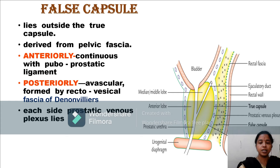Anteriorly, the false capsule continues with the puboprostatic ligaments. Posteriorly, it is avascular and is formed by the rectovesical fascia, called the fascia of Denonvilliers. On each side, the prostatic venous plexuses are located.